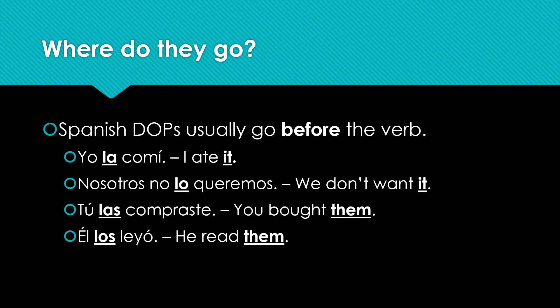In English, we put them at the end of the sentence. In the sentence you bought them, tú las compraste, the las goes before the verb. And in the sentence él los leyó — he read them — the direct object pronoun goes before the verb. So the order is a little bit different in Spanish than it is in English, but you guys are used to the order being different.